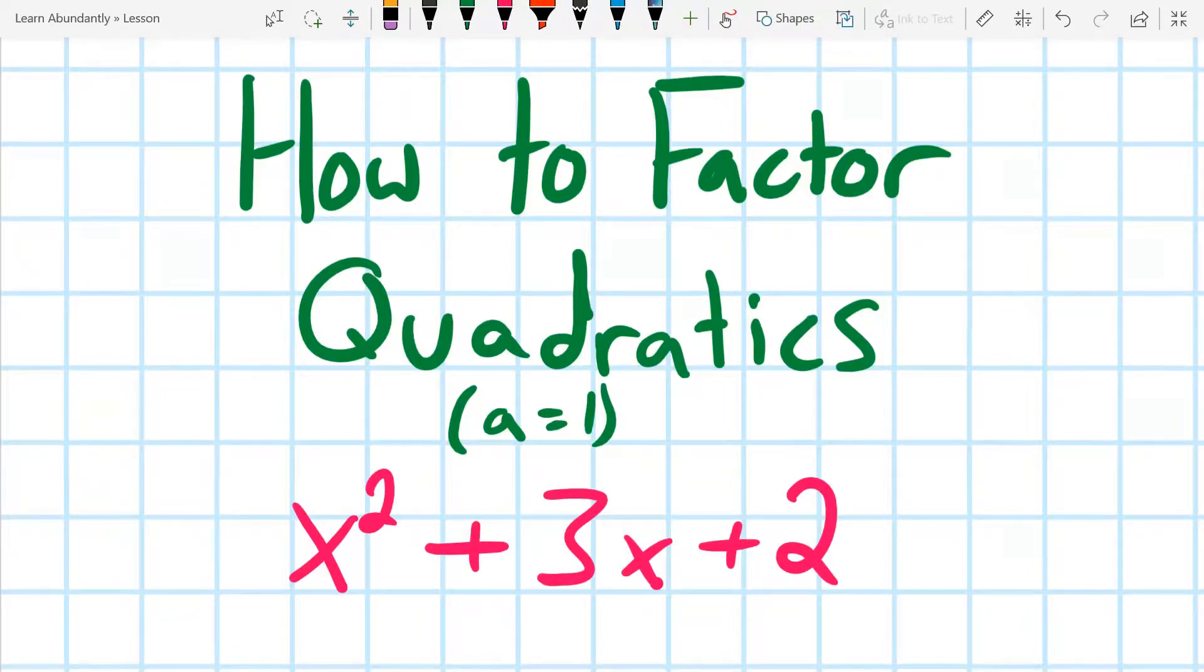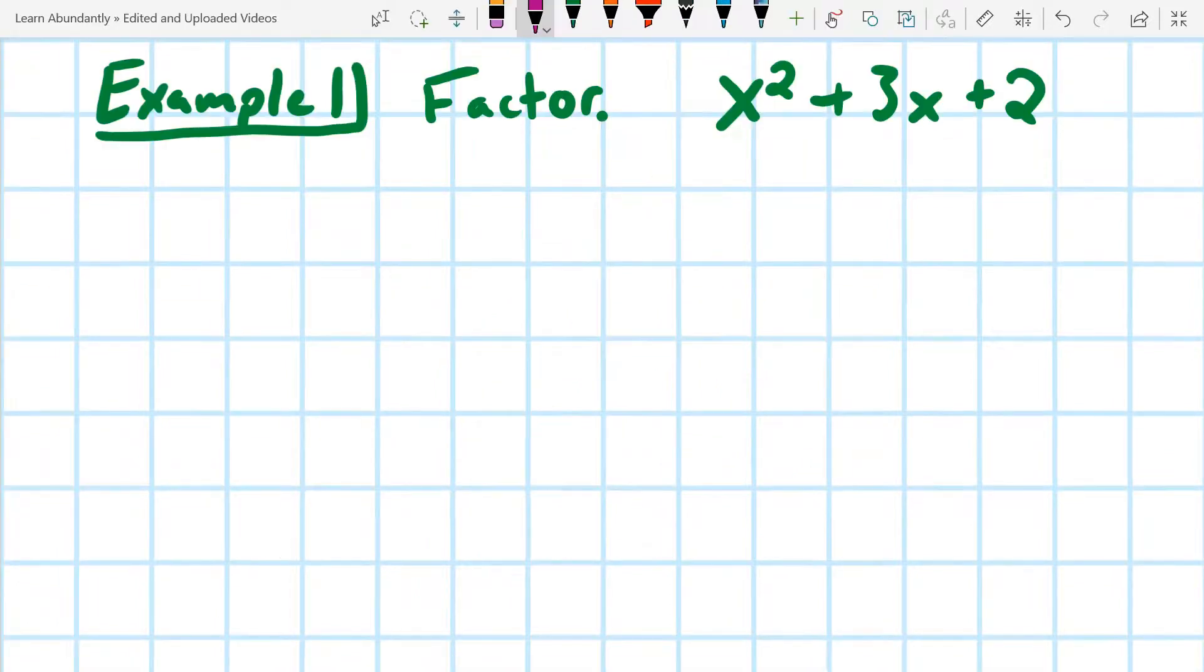Today we're going to learn how to factor quadratics with a lead coefficient of 1. The first thing I want you to notice is that we have three terms. And one of the big things about the type of problem we're doing here is that the front term is a 1.